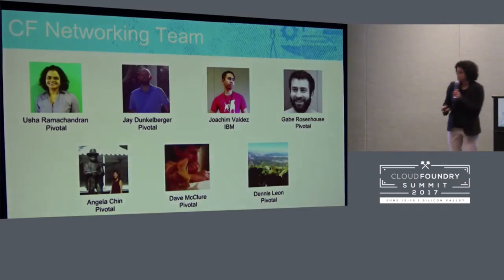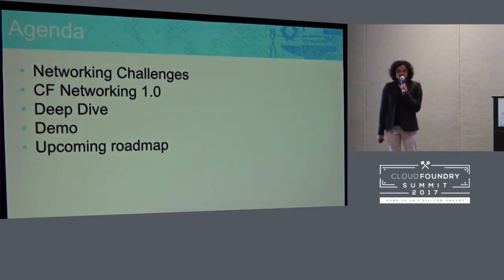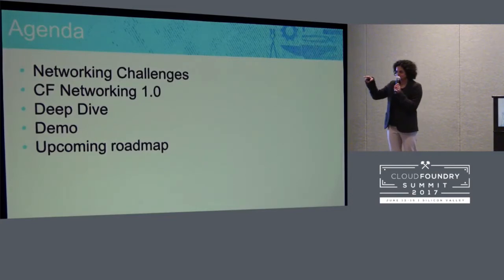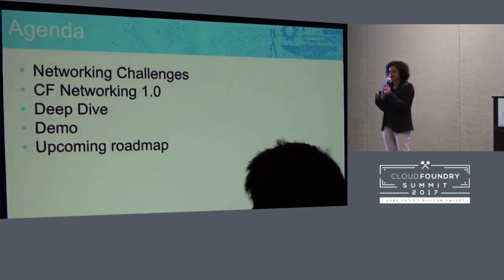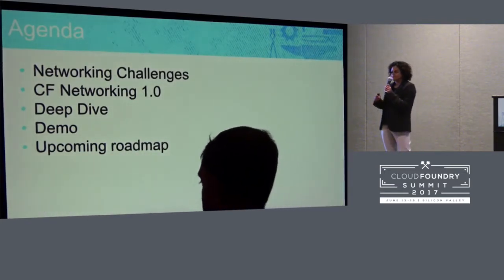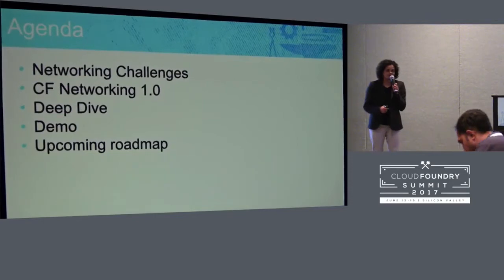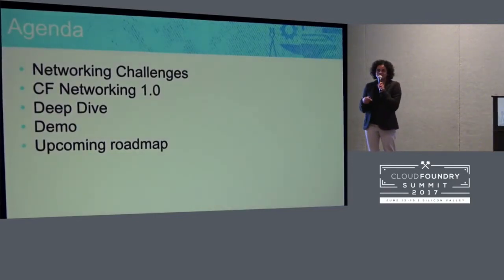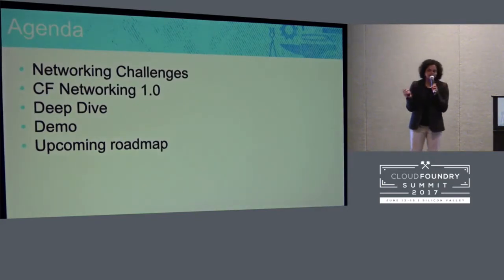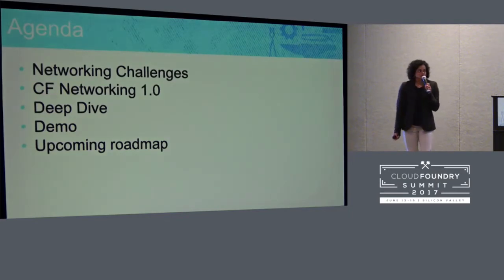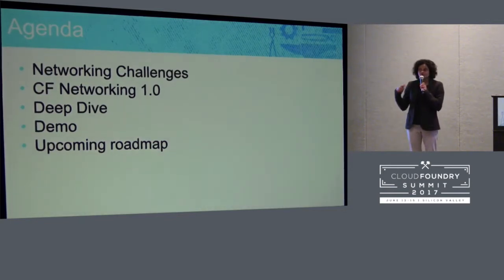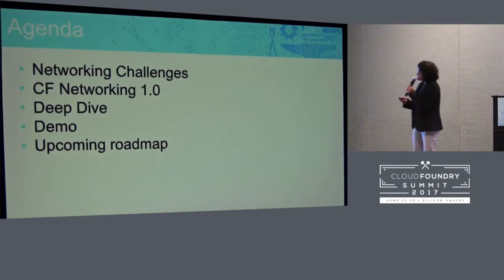The agenda we have for you is to go over some of the networking challenges. For those who were here at the CF networking session last year, I'm going to start with a history lesson about the challenges we were trying to address, then we'll talk about CF networking 1.0, then Jay will do a deep dive into how it actually works and a demo, and then we'll spend a little bit of time on the roadmap. This is a 30-minute session. We have office hours later this afternoon, so stop by and ask us your questions.